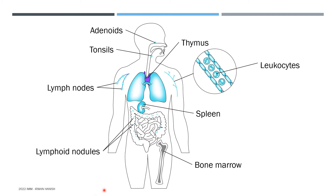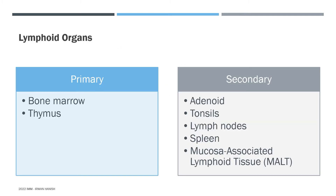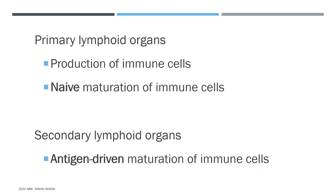Then you have lymphoid organs, which are like large military bases. Examples of lymphoid organs are adenoids, tonsils, thymus, spleen, and bone marrow. Lymphoid organs are of two categories: primary and secondary. You only need to remember the two primary lymphoid organs — bone marrow and thymus. Other lymphoid organs you come across can be considered secondary lymphoid organs. Primary lymphoid organs produce the immune cells — it's like primary military bases where soldiers are born and raised. This raising of immune cells is called naive maturation.